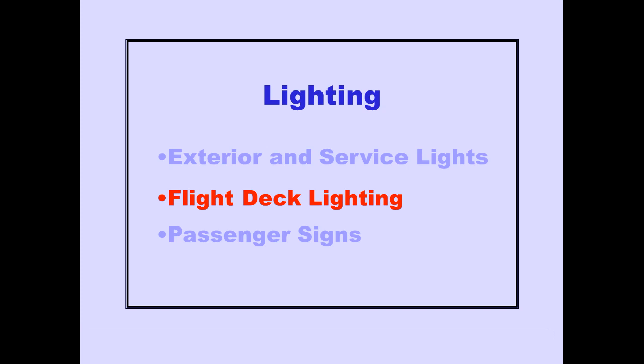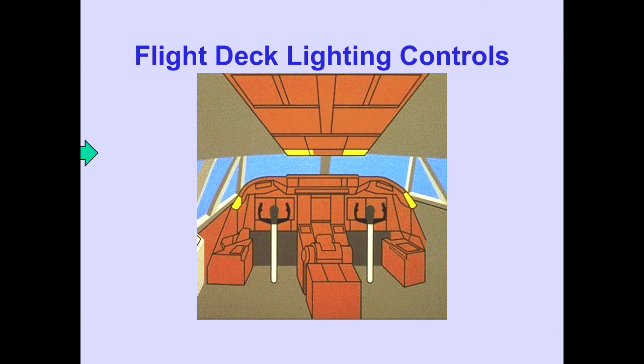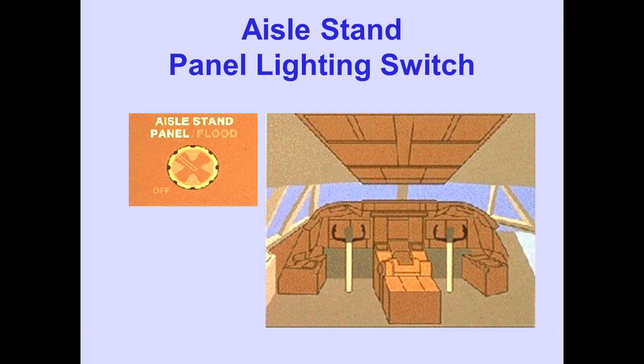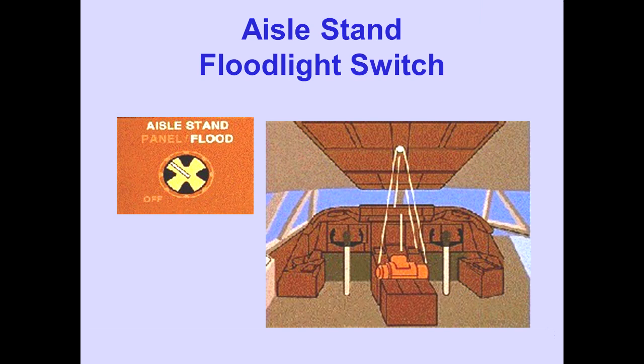Now let's look at flight deck lighting. Controls for the flight deck lights are located on the overhead panel and the left and right sides of the glare shield. The aisle stand panel and floodlight rotary switches are located on the overhead panel. The outer portion of the aisle stand panel flood control varies the brightness of the aisle stand panel lights, and the inner portion varies floodlight brightness.